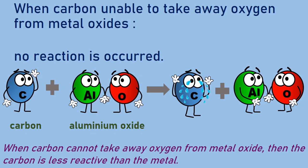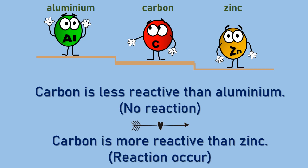There are times when carbon is unable to take away oxygen from metal oxides. In this case, no reaction occurs. For example, when carbon reacts with aluminum oxide, no reaction happens. When carbon cannot take away oxygen from a metal oxide, then carbon is less reactive than that metal. So, carbon is less reactive than aluminum. There will be no reaction when carbon reacts with aluminum oxide, but there will be a reaction when carbon reacts with zinc oxide. So, carbon is situated between aluminum and zinc. Thus, carbon is less reactive than aluminum but more reactive than zinc.